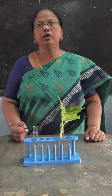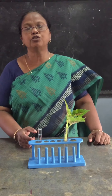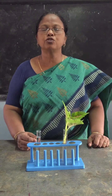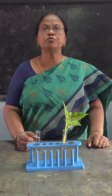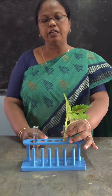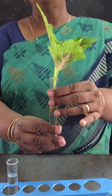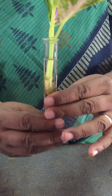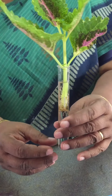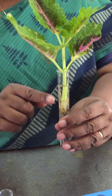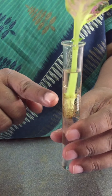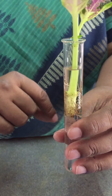Hi children, today I am going to show you an experiment which shows that water is absorbed by the roots. For that I have taken a small plant — a small herb called coleus — and the roots of this plant are dipped in water.